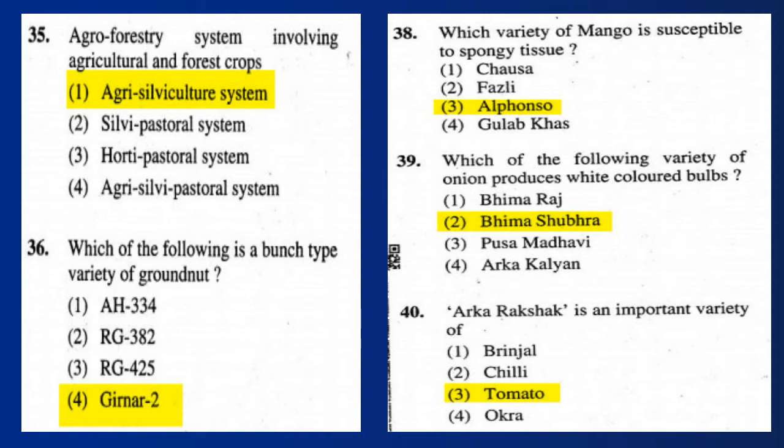Question 38: Which variety of mango is susceptible to spongy tissue? Answer: Alphonso. Question 39: Which variety of onion produces white-colored bulbs? Answer: Bhima Shubhra.